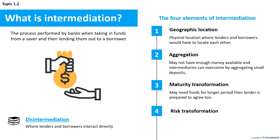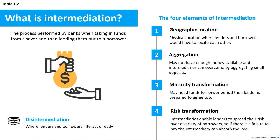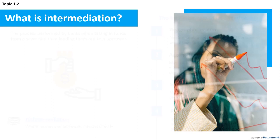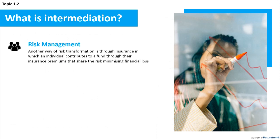Risk transformation: due to the risk of default or fraud, individual depositors are generally reluctant to lend all their savings to another individual or company. Intermediaries enable lenders to spread their risk over a variety of borrowers, so if there is a failure to pay, the intermediary can absorb the loss. Another form of risk transformation is through insurance, in which an individual contributes to a fund through their insurance premiums, sharing the risk and minimising financial loss.